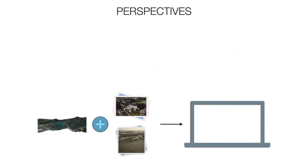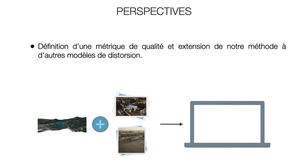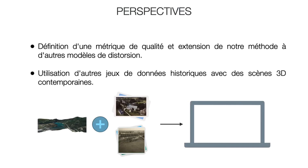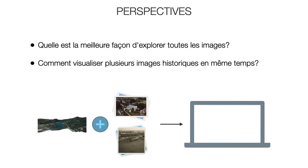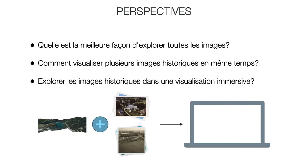As future work, there are still many possibilities to continue with our line of work. We would like to show the effectiveness of our method by defining a quality metric and extend the distortion definition to other distortion models. Additionally, we plan to work with other historical datasets using contemporary 3D scenes. We are interested not only in presenting the historical image in a 3D context, but also helping the user navigate from one image to another considering the large amount of photos, their heterogeneity and the available estimated information. We want to extend to show not only one picture but several images at the same time. Immersive visualization is another topic to be explored, and for now we recommend our method only for virtual reality, since in augmented reality the optical view is not subject to distortion.